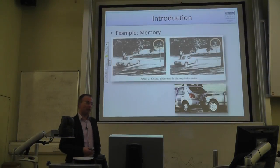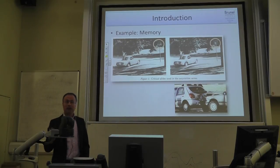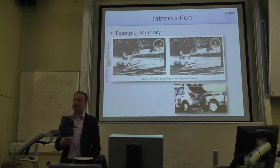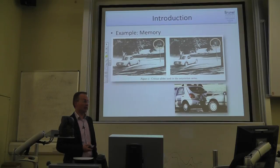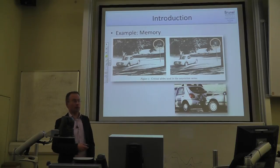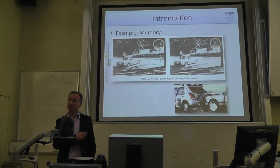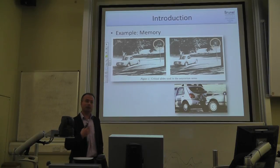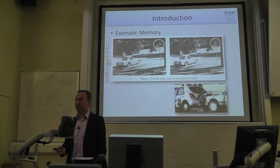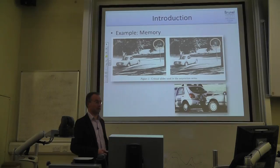An example from memory: very important is the question of how accurate memory is in eyewitness testimony. When people report scenes before an accident, you can manipulate which traffic sign was presented and phrase questions to modify the answers of people — so to say, to modify memory. That is part of cognitive psychology.